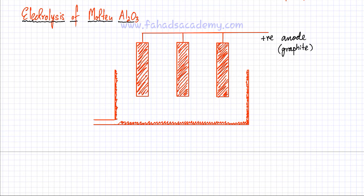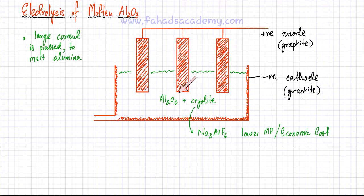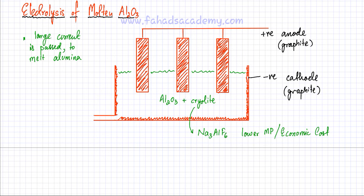The reason graphite (carbon) is used is that it's very cheap. There is also a drain at the bottom to collect molten aluminium. Solid alumina, Al2O3, is placed in the container, but cryolite, Na3AlF6, is mixed with it. Solid alumina cannot conduct electricity on its own as its ions aren't free to move. Cryolite lowers the melting point of the mixture from around 2000°C down to around 1000°C, reducing energy costs.